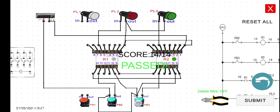If we release PB3, PL3 turns off. In the next lesson, we will combine the interlocking circuit with the holding contact. See you in the next lecture. Thank you.